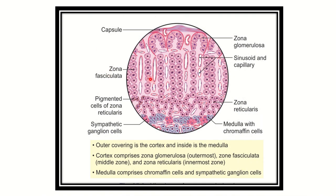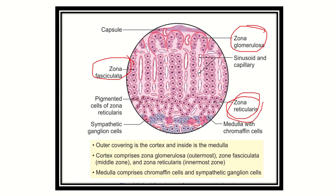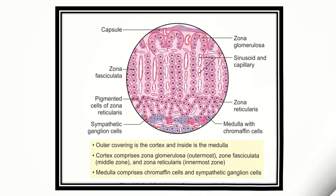The histological layers of the suprarenal gland are divided into three zones: zona glomerulosa, zona fasciculata, and zona reticularis. The outermost layer is the zona glomerulosa and the innermost layer is the zona reticularis. This is all about the adrenal gland — thank you.